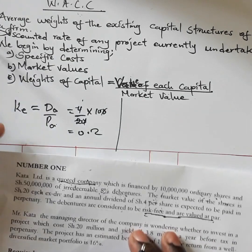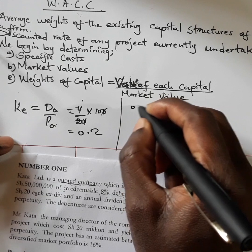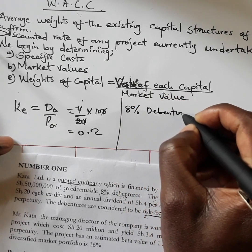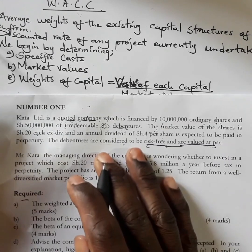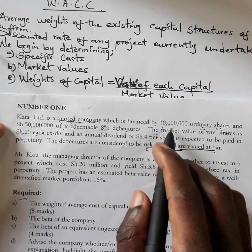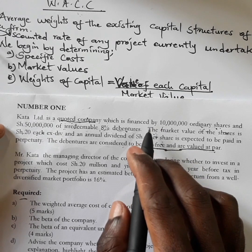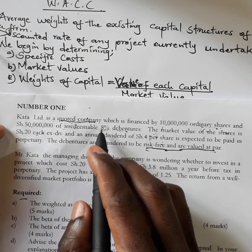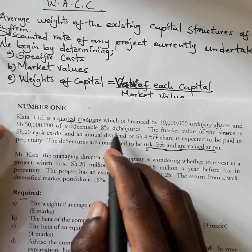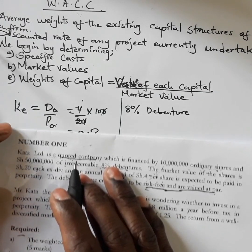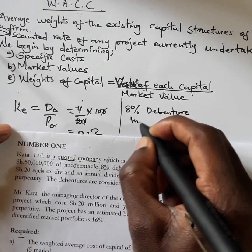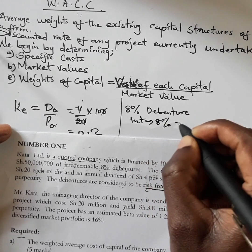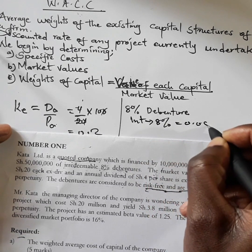The other type of capital in this firm is the 8% debenture. Because there is no market value by virtue of it being irredeemable, the 8% interest rate is the cost of this debenture. So the cost of the debenture is the interest rate, which is 8%, equivalent to 0.08.